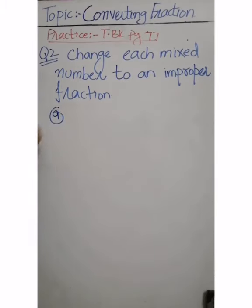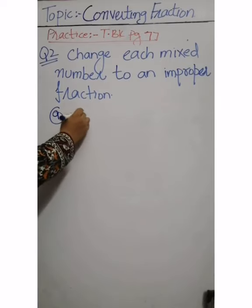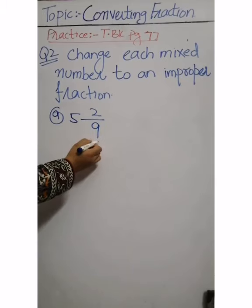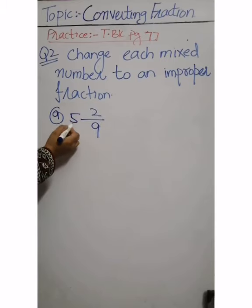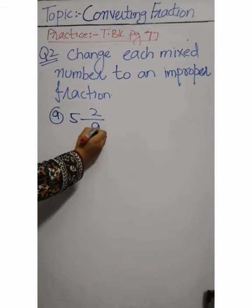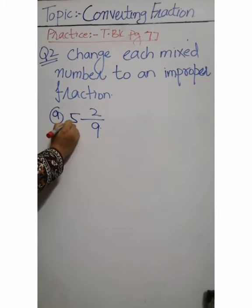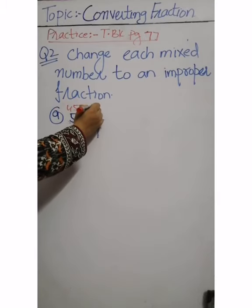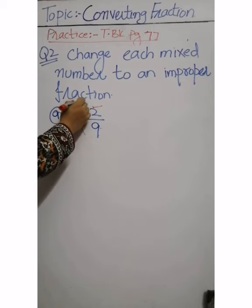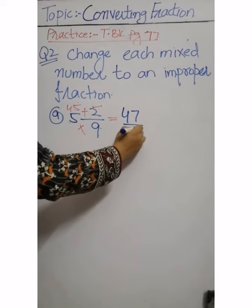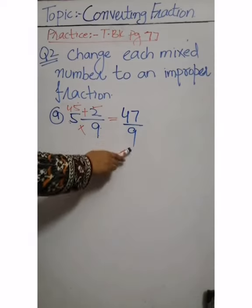Part a is 5 whole 2 by 9. This is a mixed number and you have to change it to an improper fraction. The procedure is: first, multiply the denominator by the whole number — 9 times 5 gives 45 — then add the numerator. 45 plus 2 gives 47 by 9. This is an improper fraction in which the numerator is greater than the denominator.